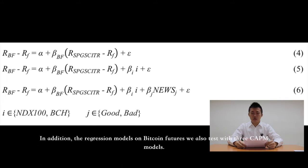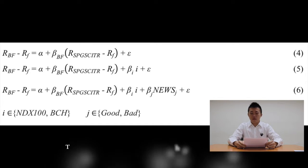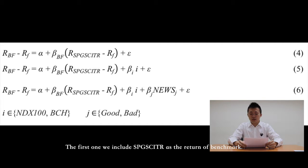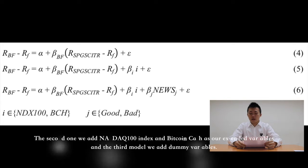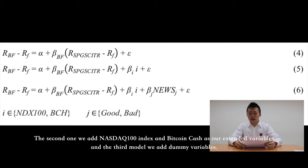In addition, for the regression model on Bitcoin futures, we also test with three CAPM models. The first one includes the total return of SPG SCI as the return of benchmark. The second one adds NASDAQ 100 index and Bitcoin cash as our extended variables. And the third model adds dummy variables.